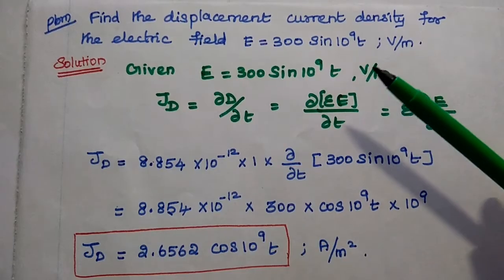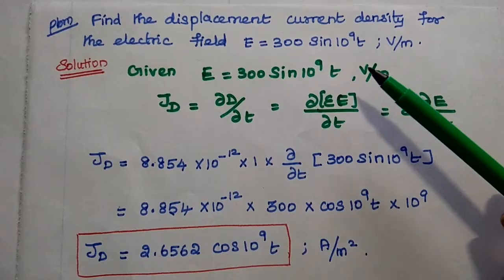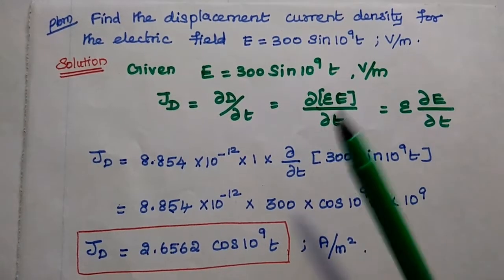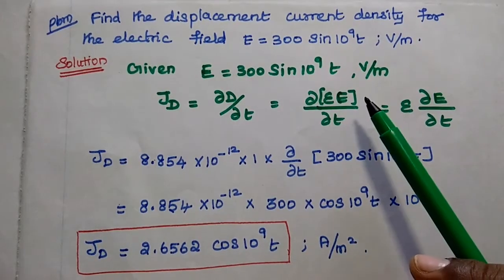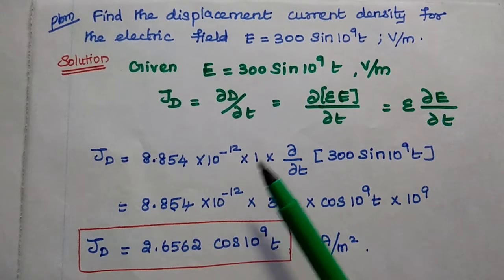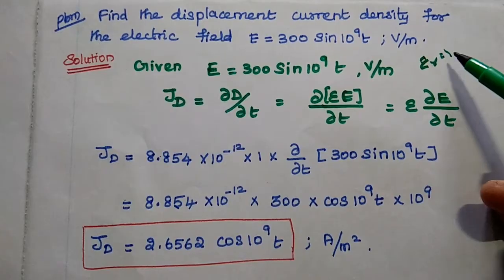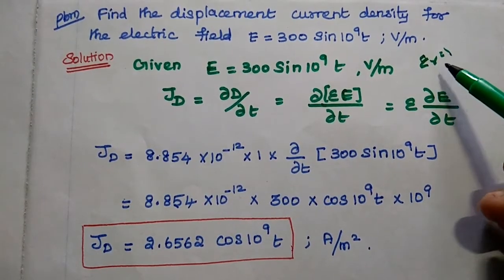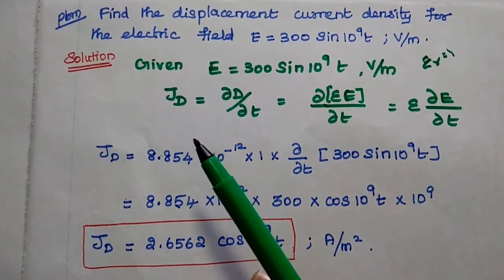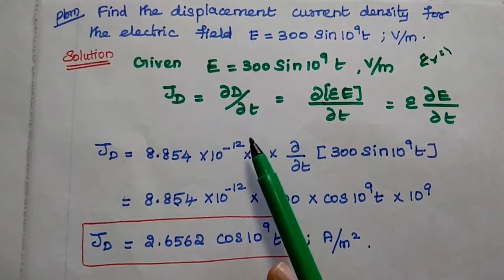The next problem: find the displacement current density for the electric field E = 300 sin(10⁹T) volts per meter. In this problem only the electric field is given. We can assume epsilon_R = 1 if it is not given. We will use the formula JD = ∂D/∂T.